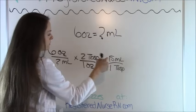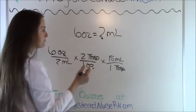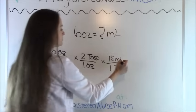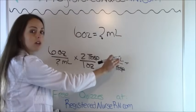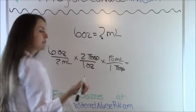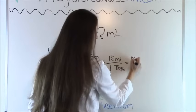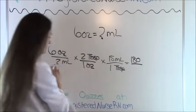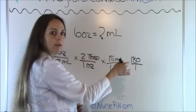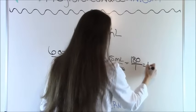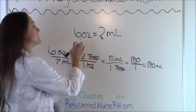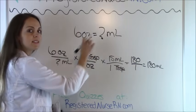We have converted to milliliters, so tablespoons is marked out. We went from ounces to milliliters, which is where we wanted to go. Now multiply everything on top: 6 times 2 times 15 equals 180. Everything on the bottom is 1 times 1, which equals 1. And 180 divided by 1 equals 180. So there are 180 milliliters in 6 ounces.